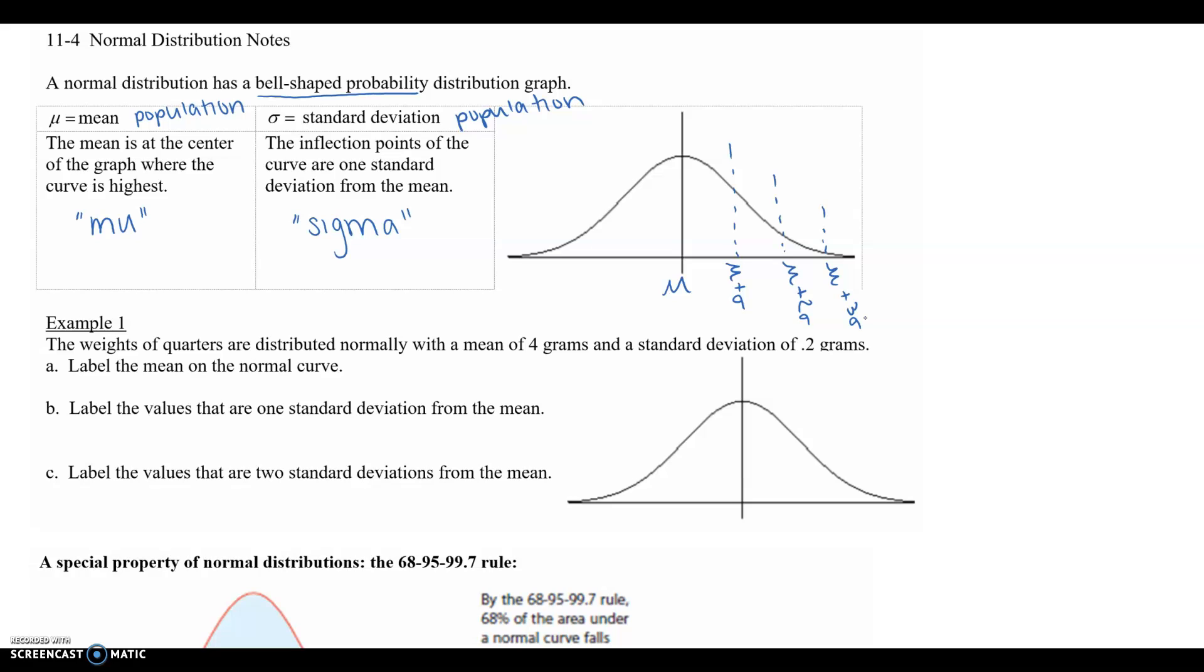And then similarly we can go to the left, so the mean minus sigma - one standard deviation from the mean, two standard deviations from the mean, three standard deviations from the mean. Now you can go more, but statistically speaking all of your data is going to be within three standard deviations from the mean, so we don't need to go any further than that.